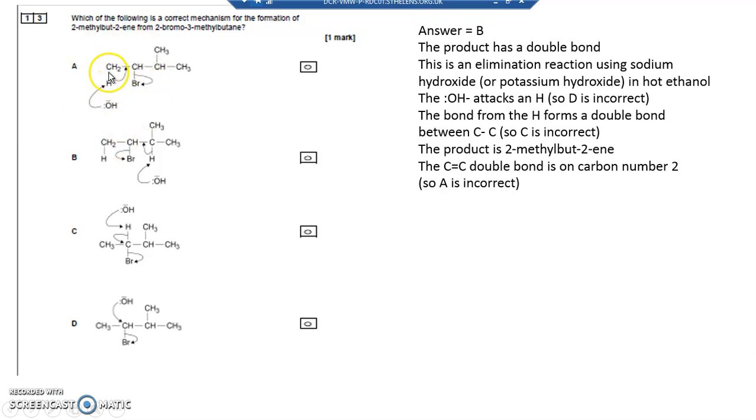The only difference is that this one's going to form a double bond here between carbon number 1 and carbon number 2, so you're going to end up with 2-methyl-but-3-ene, whereas this one you'll end up with 2-methyl-but-2-ene, because the double bond will be here at carbon number 1, 2. So this one's correct. So let's just have a look again.